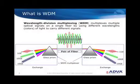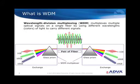WDM can be summed up as: you want to get more stuff out of a fiber. If you assign things to different colors, you're going to be able to squeeze more into that fiber. So when you hear about wavelengths, these are just different colors on a fiber.